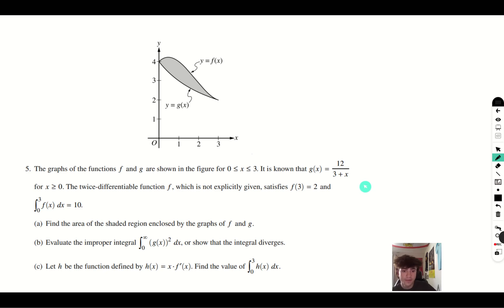The graph of functions f and g are shown in the figure for the interval from 0 to 3. It is shown that g of x is equal to 12 over 3 plus x for x is greater than or equal to 0. The twice-differentiable function f, which is not explicitly given, satisfies f of 3 is equal to 2. And the integral from 0 to 3 of f of x dx is equal to 10.